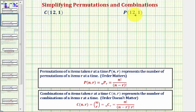Here we're given a combination and a permutation and asked to simplify. Here we have 12 choose 1. Remember, when working with combinations, the order does not matter.